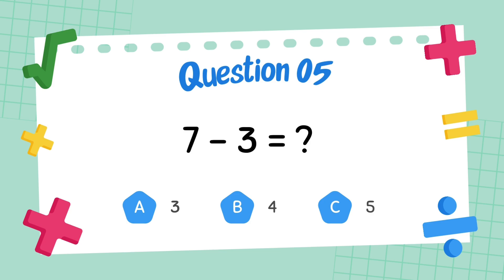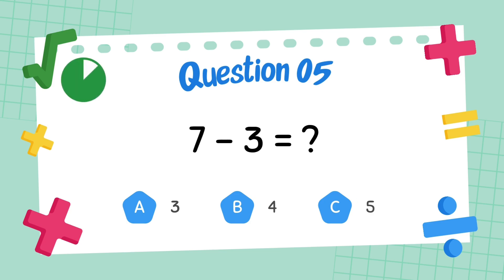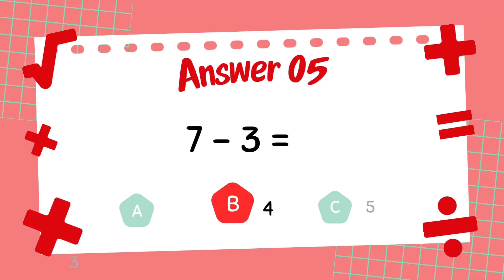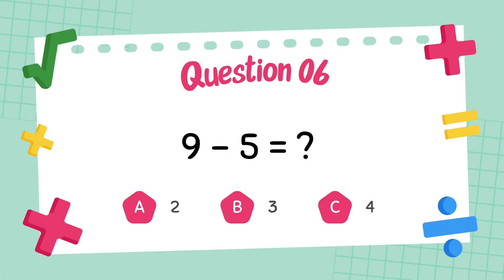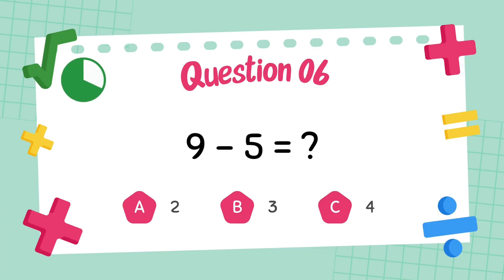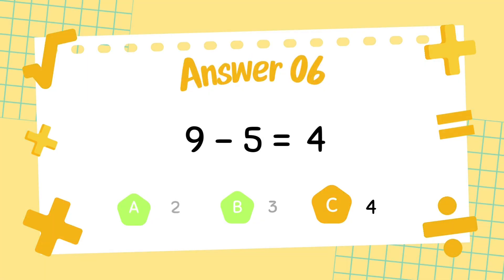What is 7 minus 3? The answer is 4. What is 9 minus 5? The answer is 4.